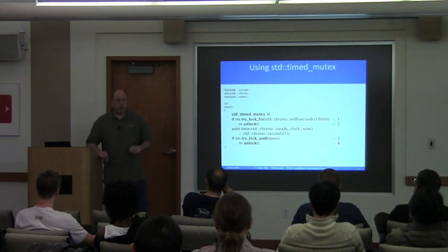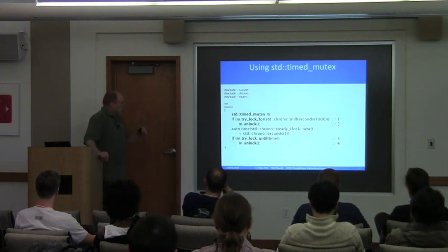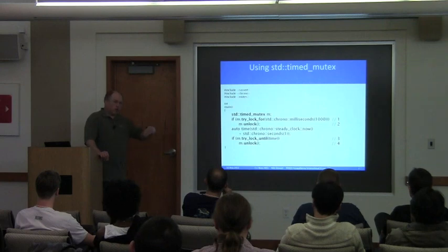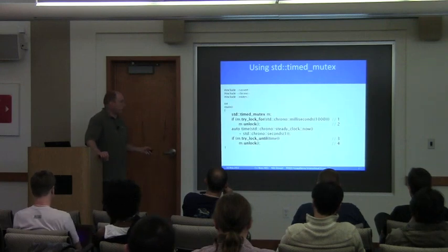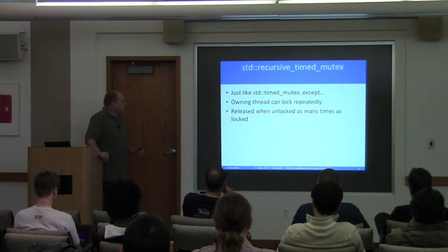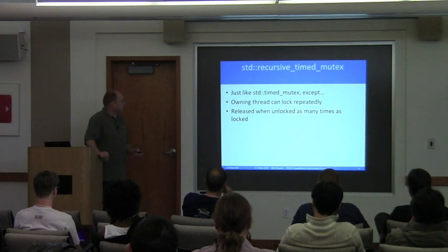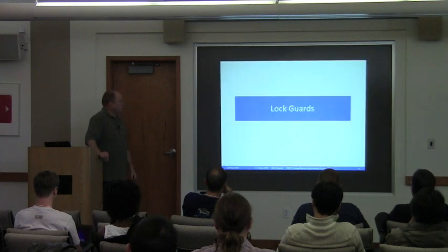There's a concept for clocks and you can develop one yourself. According to that clock, once time reaches the specified point, if it had not yet been able to acquire the lock, it will return false. Recursive timed mutex has all the same sorts of things.